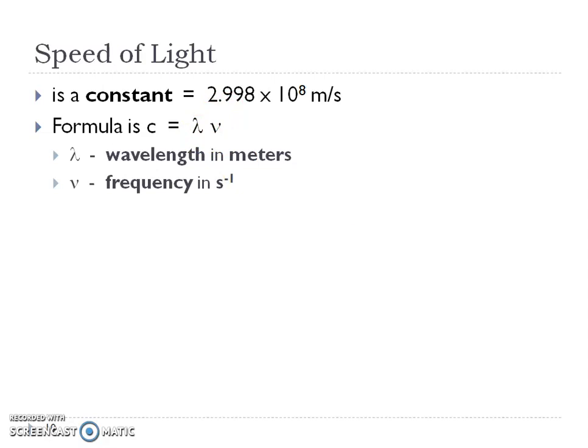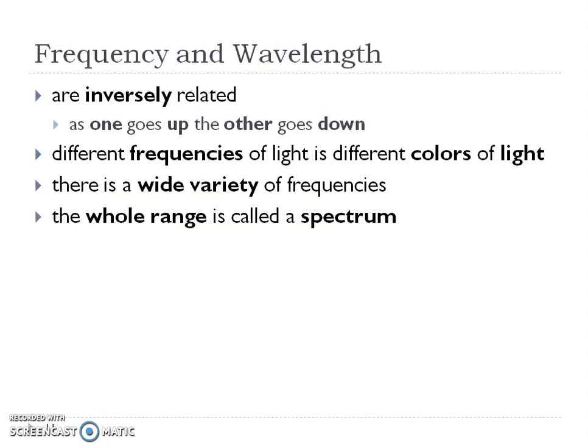One thing to remember is the units. Wavelength is going to be in meters, because wavelength is a measure of length, and frequency is s⁻¹. So I can give you wavelength and you can figure out frequency, or vice versa. Wavelength and frequency have an inverse relationship — as one goes up, the other comes down.